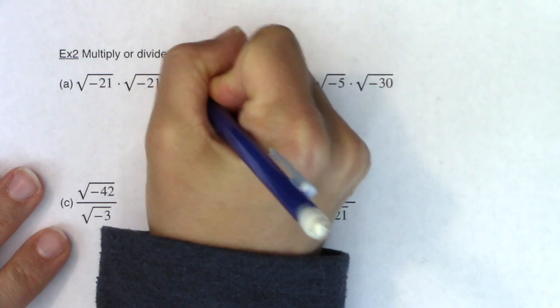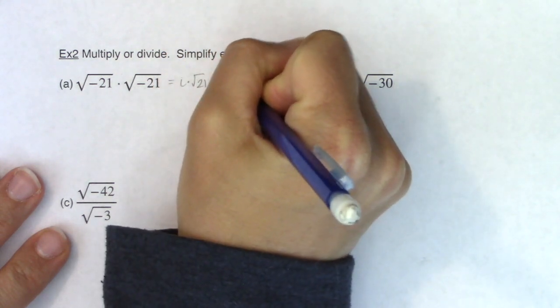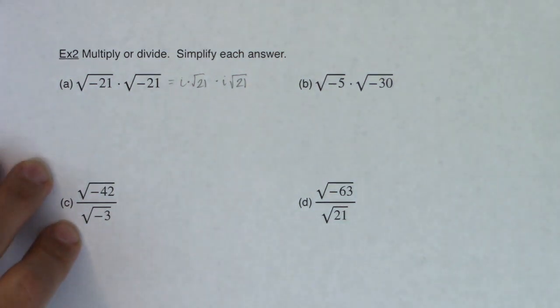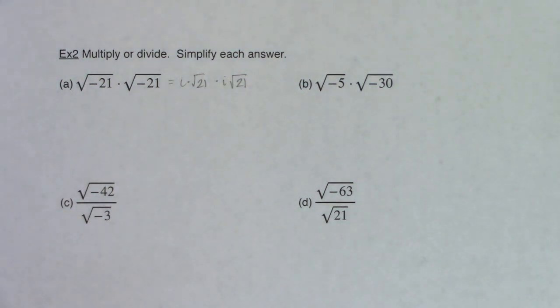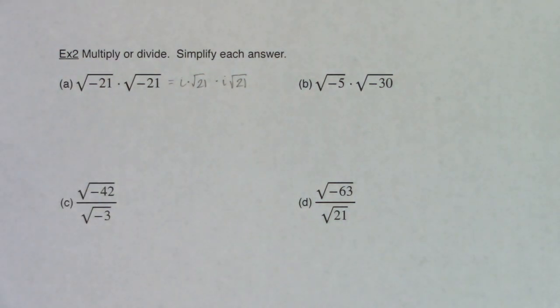So this is going to be i times the square root of 21 and then another i times the square root of 21. So when you're dealing with these complex or at least imaginary numbers, the first thing you have to do if you have an even index and a negative radicand, take that i out. That's always job number one.